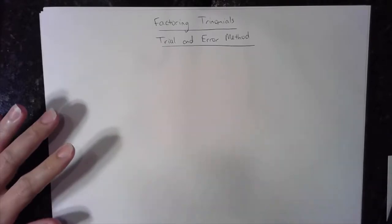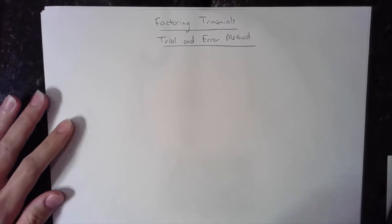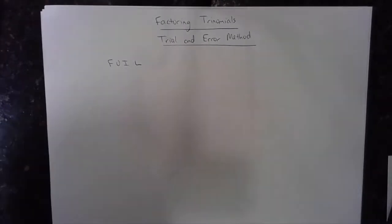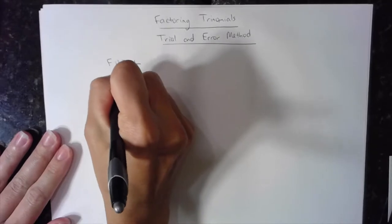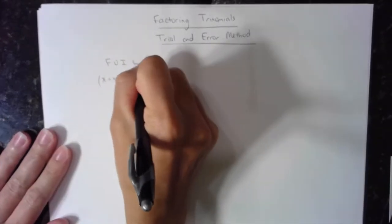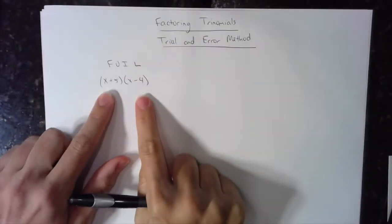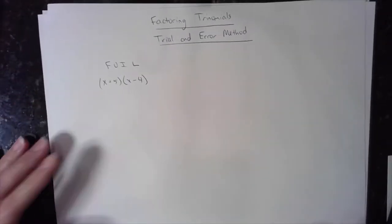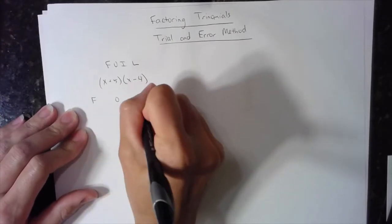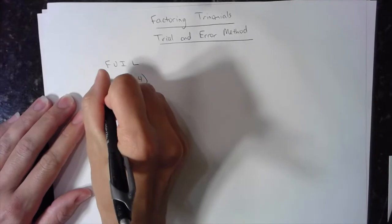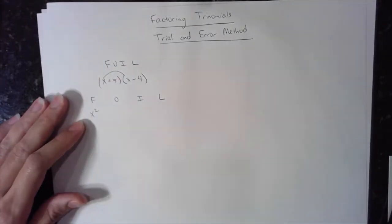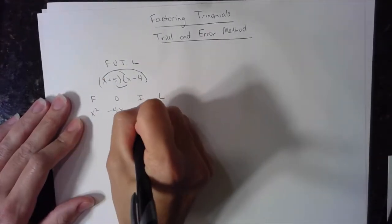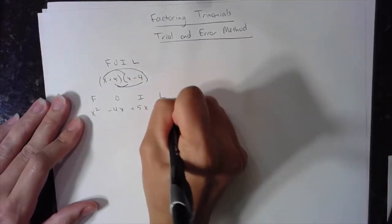Before we learn how to factor trinomials, we have to know the FOIL method, because the trial and error method basically comes from knowledge of FOIL — I want to call it a backwards FOIL. When you're FOILing, you're multiplying two binomials — two polynomials with two terms. FOIL stands for First, Outer, Inner, Last. F is First: multiply the first two terms, x times x is x squared. Outer: multiply the two outer terms, giving minus 4x.